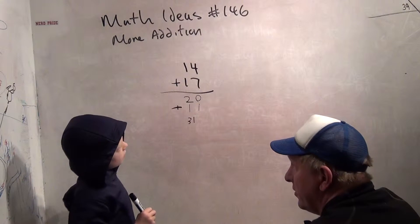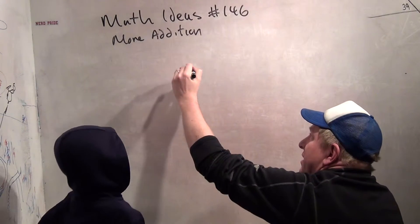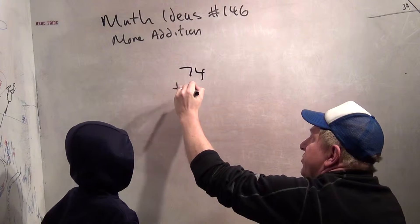Okay. You want a harder one? Alright, let's give you a harder one. How about 74 plus 27?